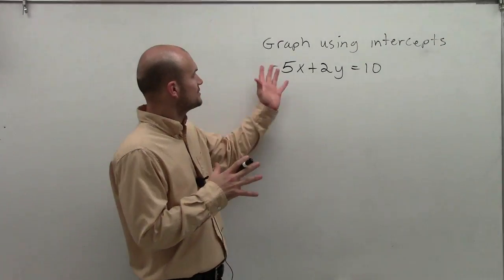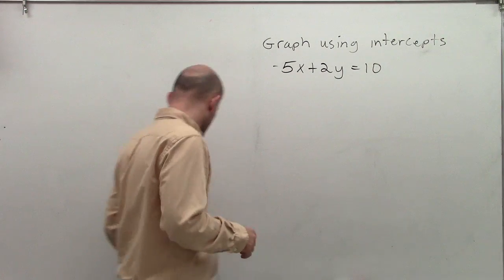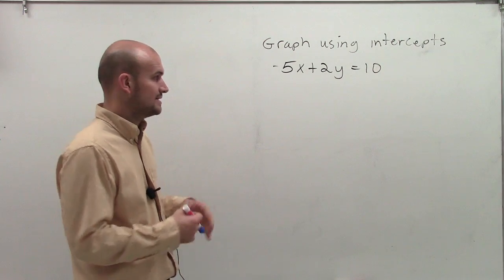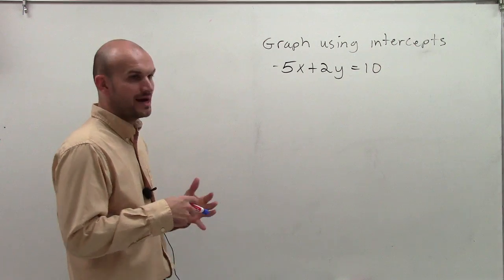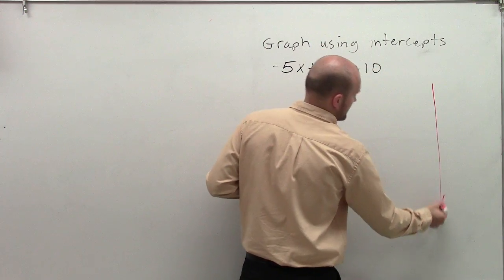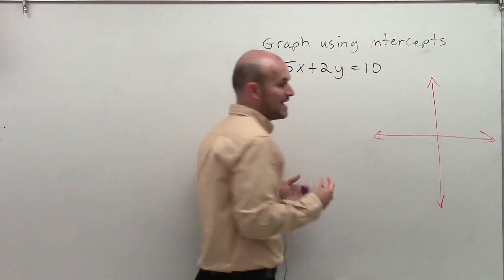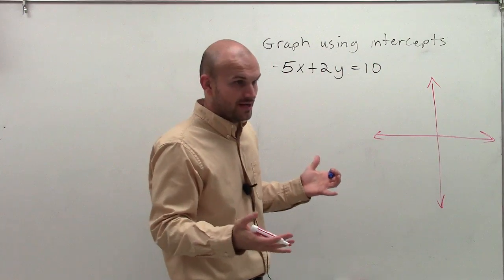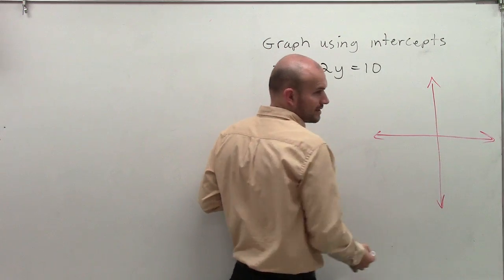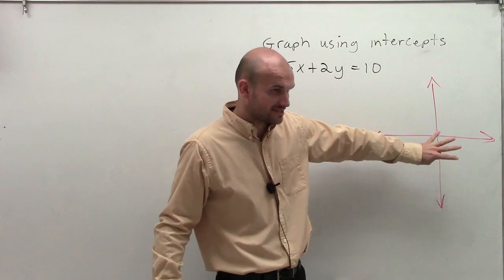All right, so what we're going to do here is just graphing using our x-intercept. So the main thing I want to remind you of, when you have a line, you're going to have intercepts. It is impossible to graph a line without having at least an x or a y-intercept. The graph is either going to go horizontally, vertically, or more than likely, it's going to have a diagonal turn to it. So it's going to cross one of these axes somewhere.